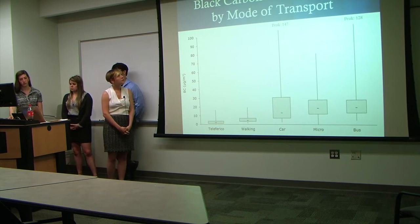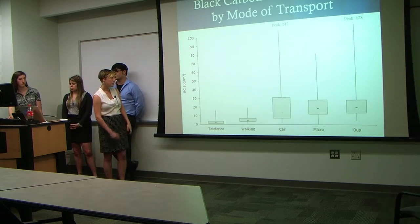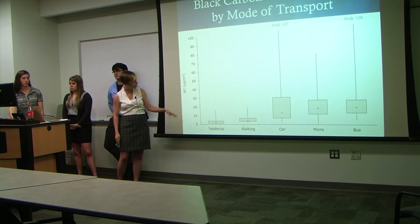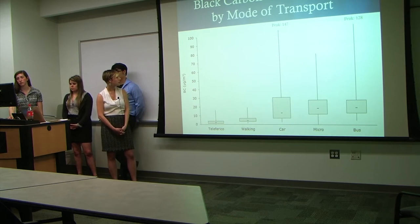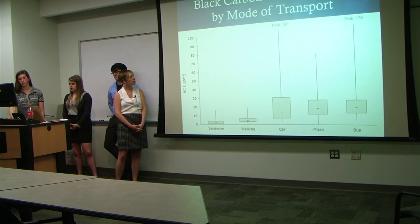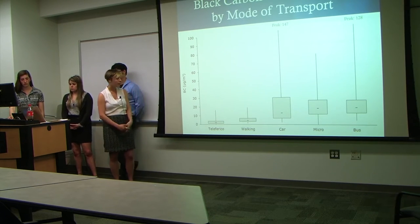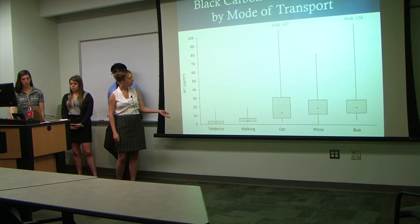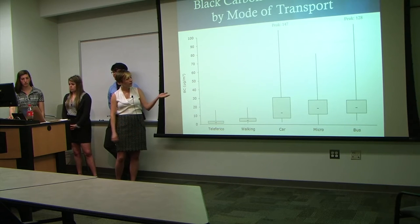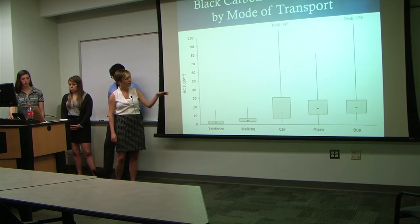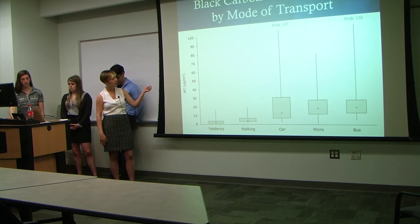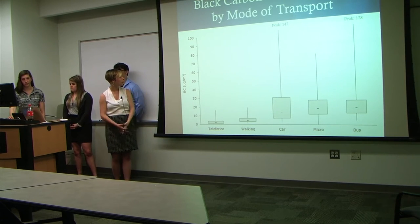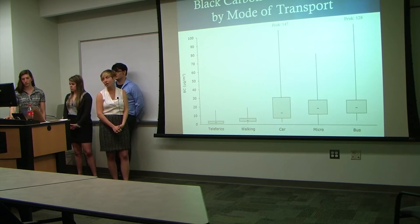Here are the results of our data for black carbon concentrations organized by mode of transportation: the Teleferico, walking, car, microbus, and diesel bus. Concentrations were measured in micrograms per cubic meter. It's very obvious that the Teleferico by far had the lowest concentrations, with walking coming in as a close second. The vehicular modes of transport were really across the board. We saw some really huge peaks, such as in the car at 147 micrograms per cubic meter, which was pretty incredible.